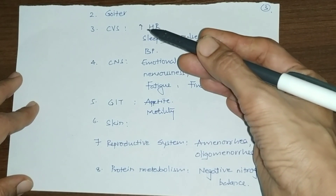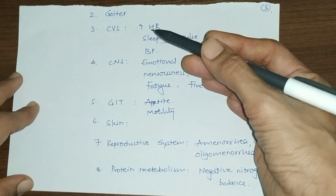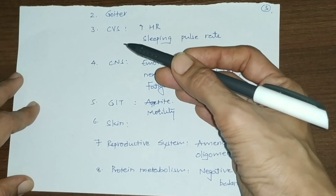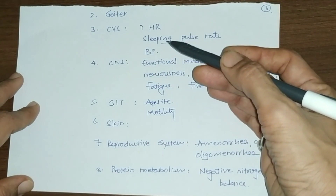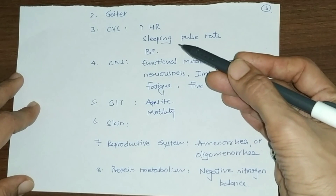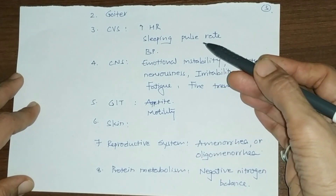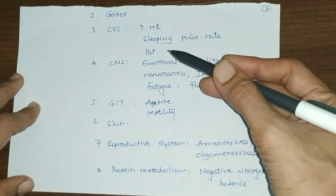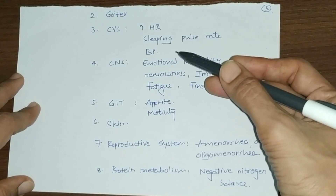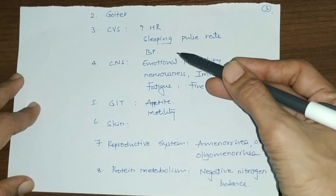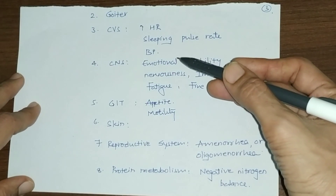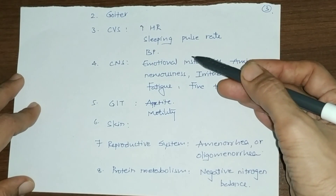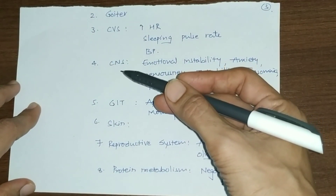Another clinical feature of Graves disease is goiter, which refers to swelling of the thyroid gland — here it is a diffuse goiter. Cardiovascular symptoms include increased heart rate and increased pulse rate. Elevated sleeping pulse rate is one of the diagnostic features of hyperthyroidism. Systolic blood pressure is increased, contributing to high cardiac output failure.